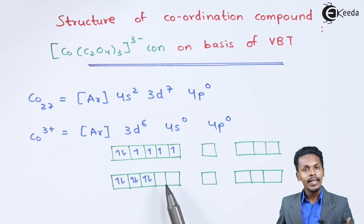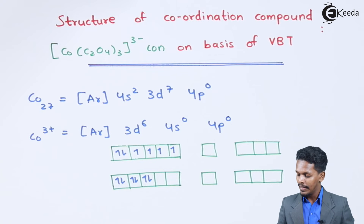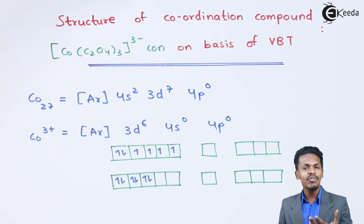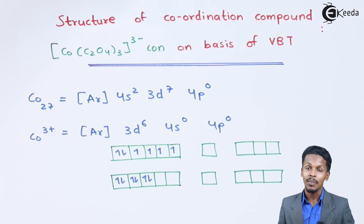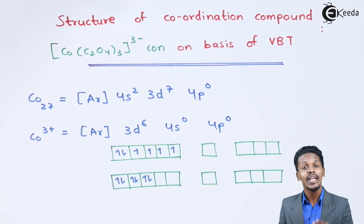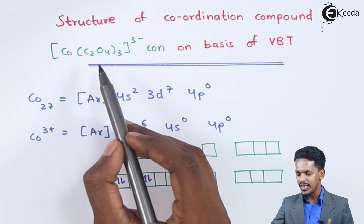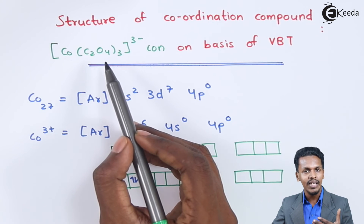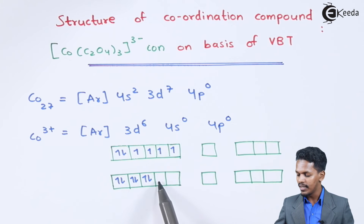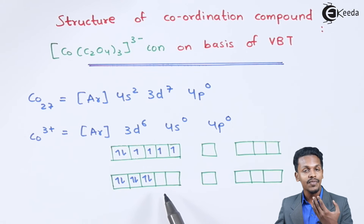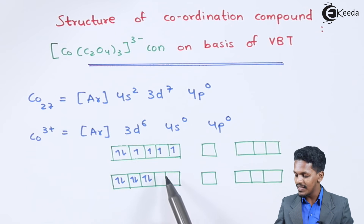After spin pairing, the empty orbitals we get are 2 empty d orbitals, 1 s orbital, and 3 p orbitals. Oxalato is in fact a bidentate ligand, meaning 1 mole of C₂O₄ will give 4 electrons — or 2 pairs of electrons — to the central metal atom, which is the cobalt ion.